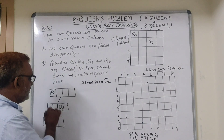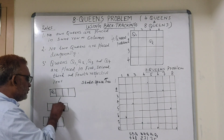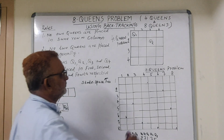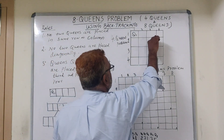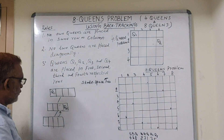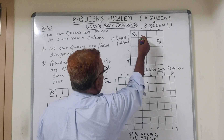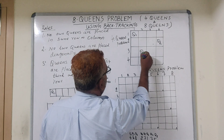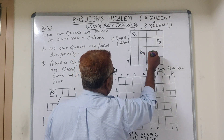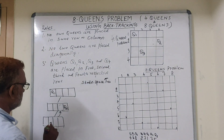So we go back and change the position of Q2. Q2 is now moved to the fourth cell of row 2. Now trying to place Q3 again: column 1 — no, same column. Column 2 — yes, this is the right place for Q3. Column 3 and 4 are diagonal or same column. So Q3 is placed in the second cell of row 3.